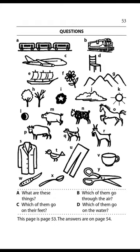Page 53. Questions. What are these things? A: a train. B: its engine. C: an airplane. D: a seat. E: a ship. F: a flower. G: mountains. H: trees. I: a star. J: a cloud. K: the sun. L: the moon. M: a pig. N: a sheep. O: a horse. P: a cow. Q: a dog. R: a goat. S: a coat. T: a bird. U: trousers. V: a cup. W: a knife. X: a spoon. Y: scissors.